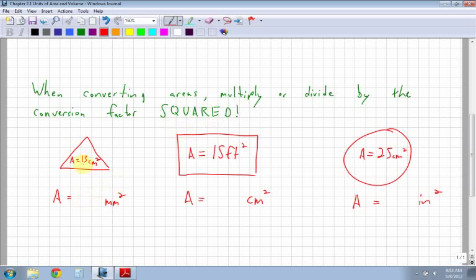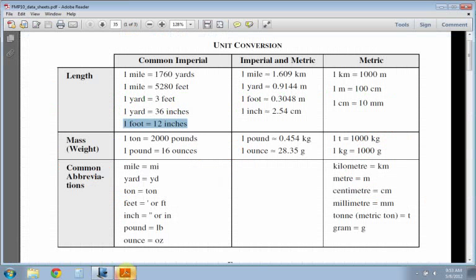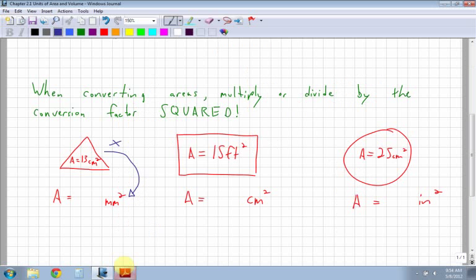In this case, I have area of 13 centimeters squared. What's that in millimeters? Millimeters is a smaller unit, which means more of them, so I multiply. For every centimeter there are 10 millimeters. So I multiply by 10, but wait - because I'm dealing with area, I have to multiply by 10 squared.